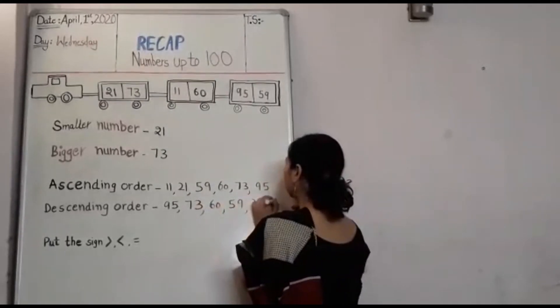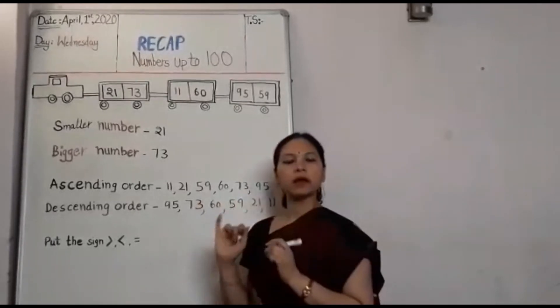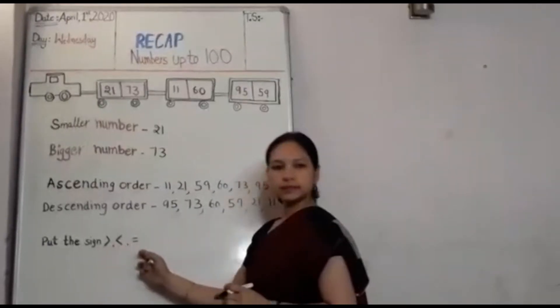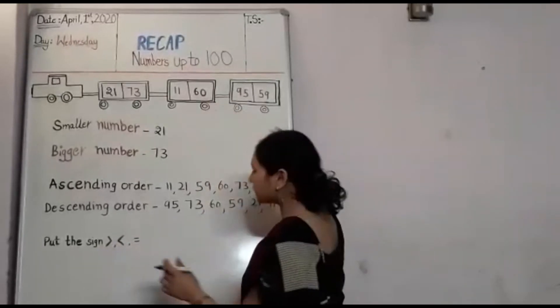After that 59, 21, and last mein 11 jo hai humara sabse chhota number. Put the sign, aur main in do numbers ko leti hun.